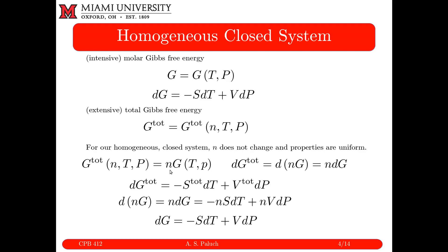G_total written as N times G takes advantage of the fact that thermodynamic functions are homogeneous functions. If G_total equals N times G, then the differential of G_total — with N constant — is just N times dG. Writing this out in extensive form, S_total = N·S and V_total = N·V, and we get the same expression as for the intensive molar Gibbs free energy. Our equations are consistent with each other.